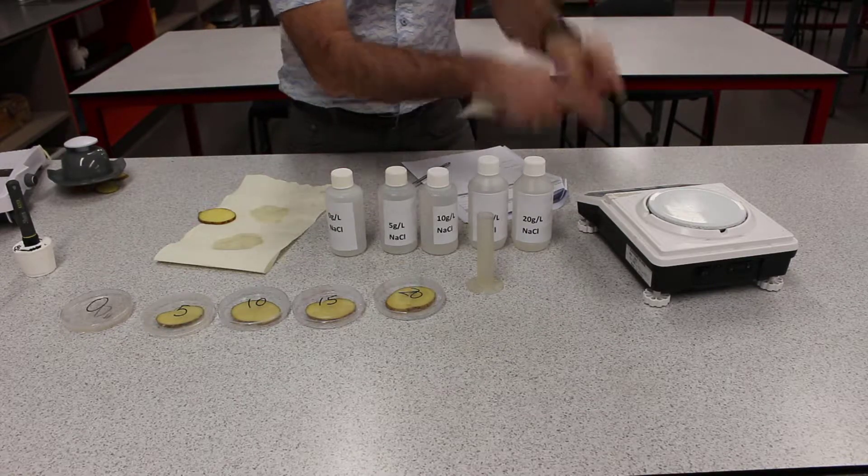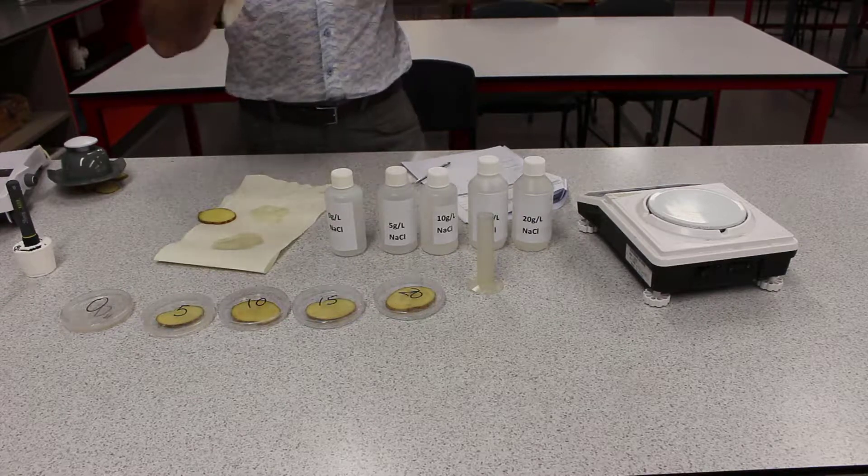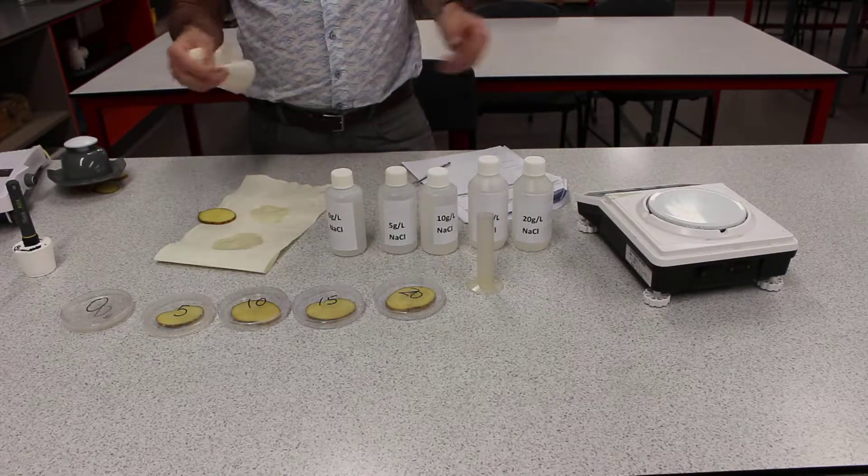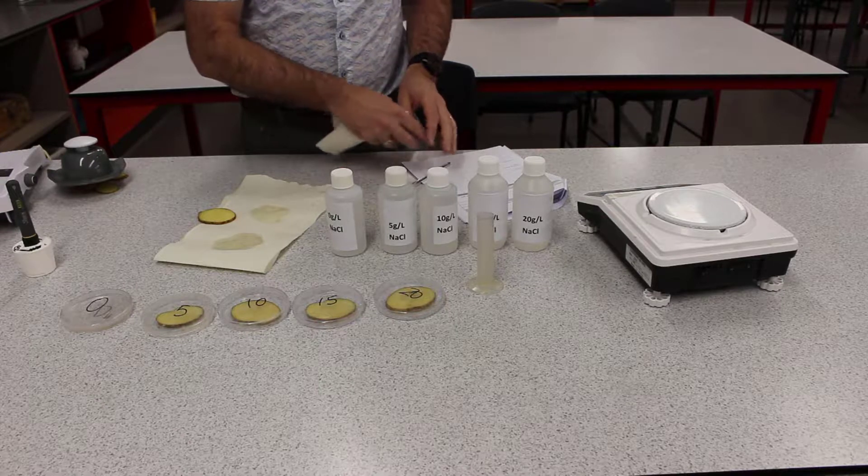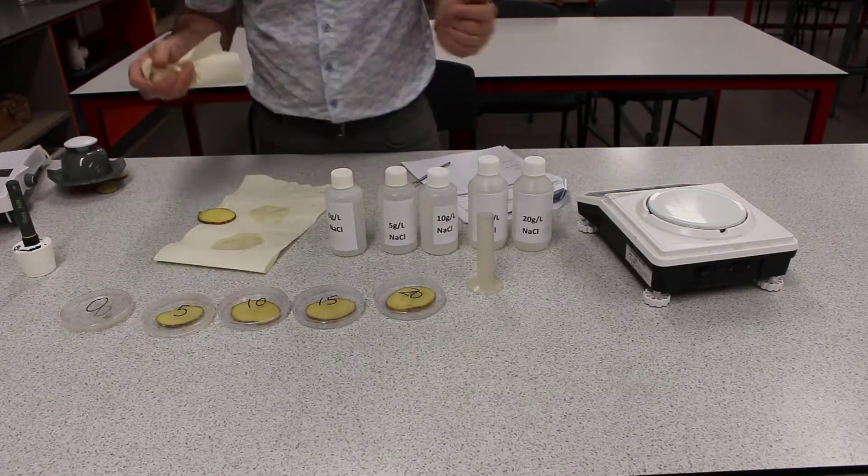So dry it, zero it, do the same thing with 5, 10, 15, 20. Make sure you record it after every one. And then you can go ahead and sit down and work out your change in mass. And it's as simple as that. Good luck.